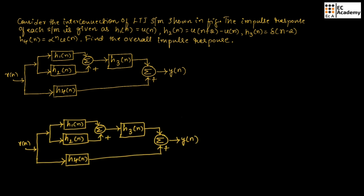Let us consider the system that is given. In this system, these two impulse responses are in parallel. So, we can write H1 of n plus H2 of n. Since a plus sign is given, we write H1 of n plus H2 of n. If there is a minus sign, we would have written H1 of n minus H2 of n.